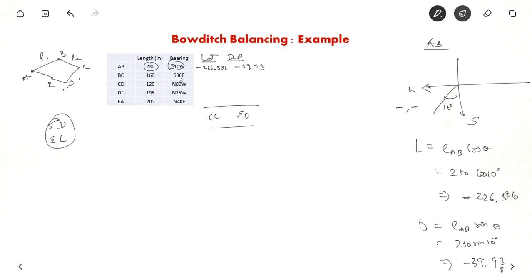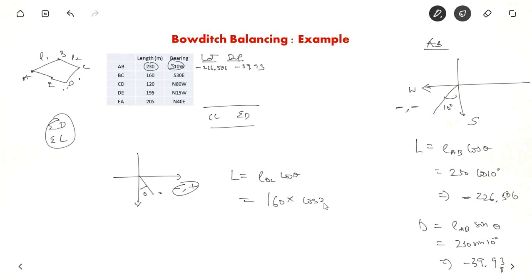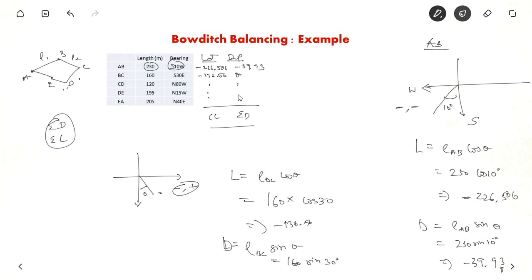Similarly, let us solve for BC. It is south 30 degrees east, so it lies in the second quadrant. Latitude is negative because it is towards the south, and departure is positive because it is towards the east. So latitude equals LBC cos theta — length BC is 160 meters, cos 30 degrees with a negative sign — which gives minus 138.56. And similarly departure equals LBC sin theta, which is 160 sin 30 degrees, positive in the second quadrant, giving 80.